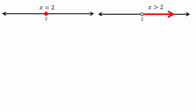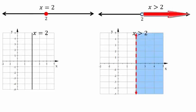Let's take a look at x equals 2 and x greater than 2. In one-dimensional space, x equals 2 is a point on a number line. X greater than 2 means 2 is not included and all points to the right of 2. In two dimensions, x equals 2 means the y-coordinate can be anything, so that gives you a vertical line — all points on this line are solutions. X greater than 2 in two dimensions means the x-coordinate has to be greater than 2 and y can be any coordinate, giving you all of this region.